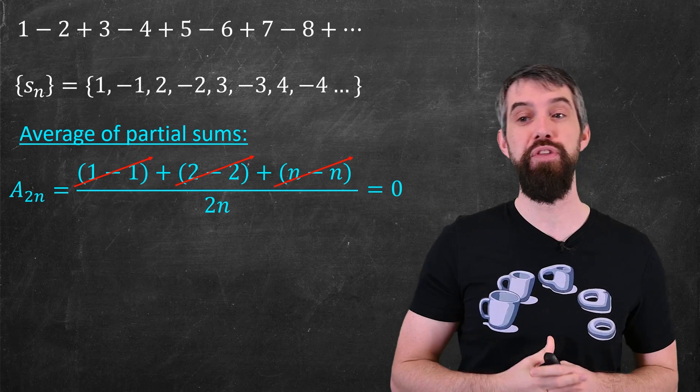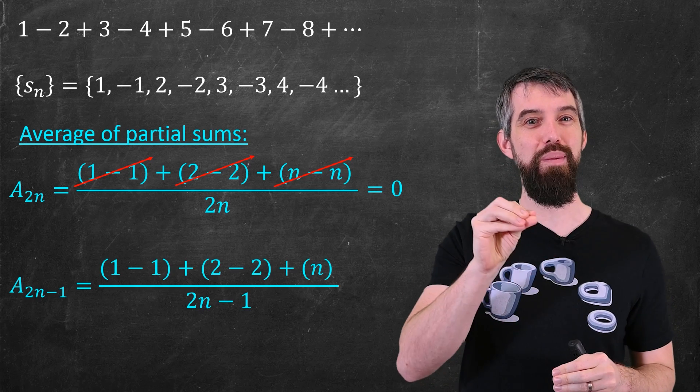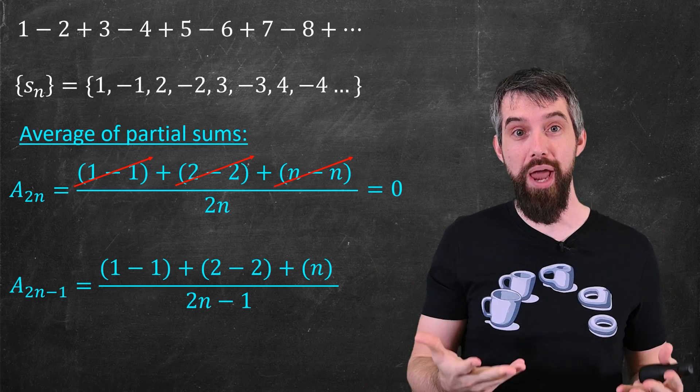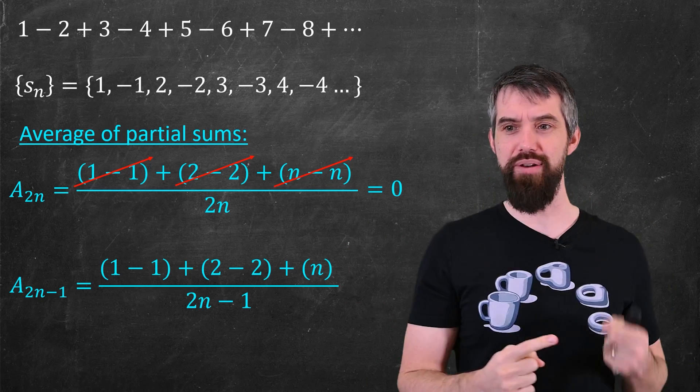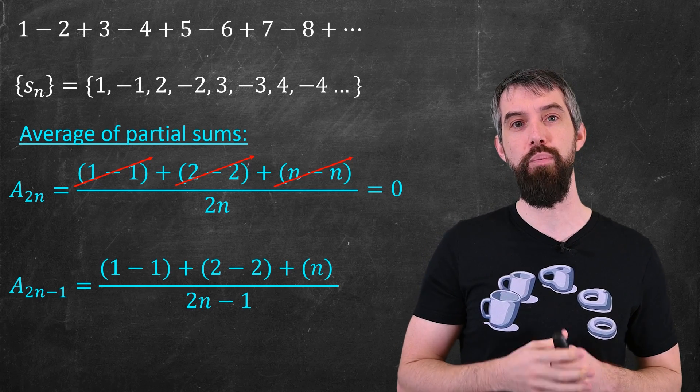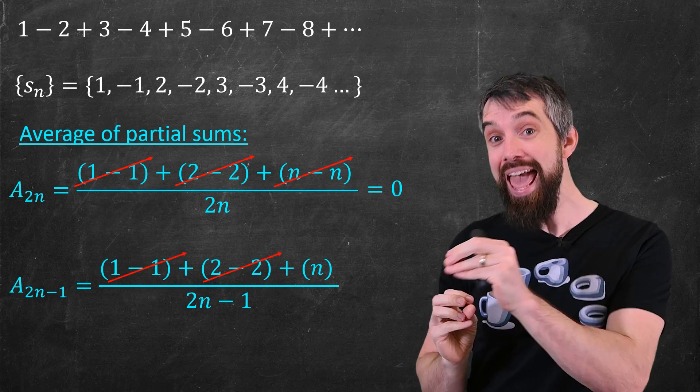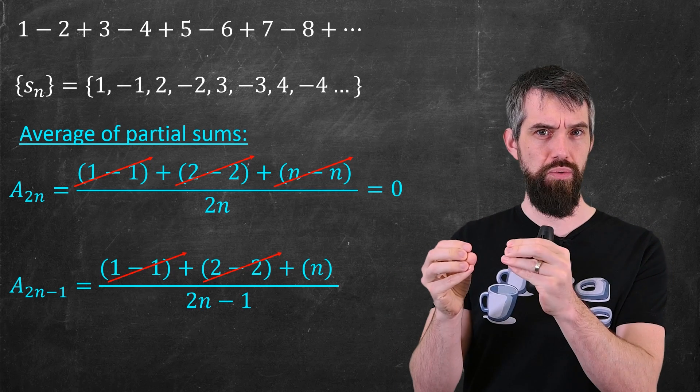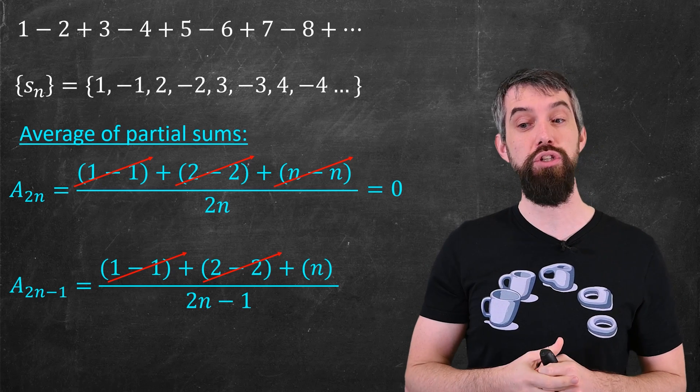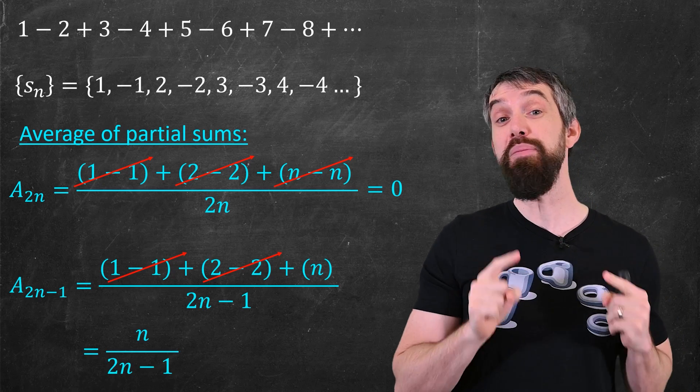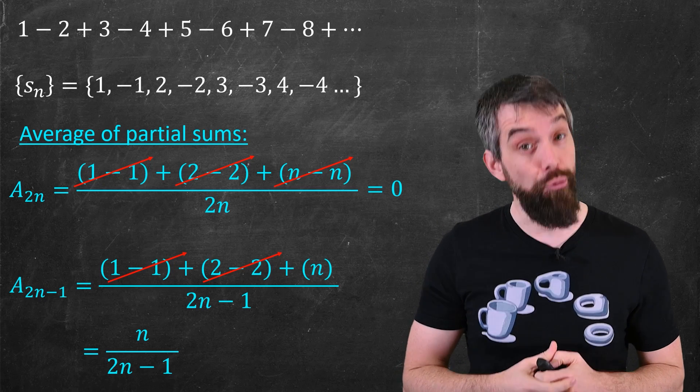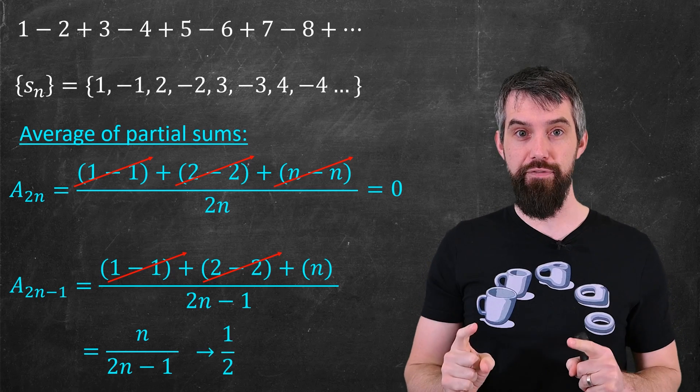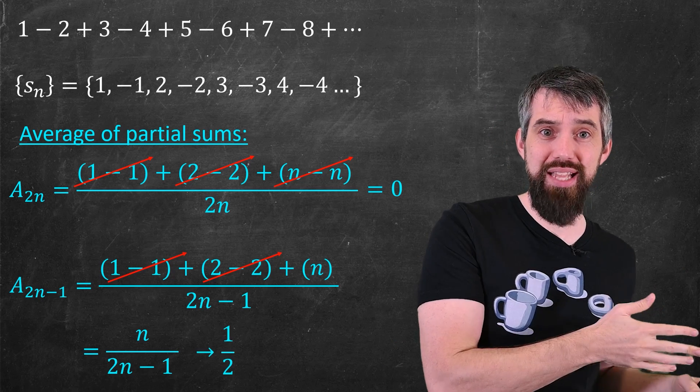But now let me do the averages of the odds, which I will use the index 2n minus 1. 2n minus 1 represents all odds with n starting at the value of 1. But now when I write it down, okay, 1 minus 1, 2 minus 2, those all cancel to 0. But it ends at n, and because it's odd, there's not a minus n at the end. So the numerator just goes to n. The denominator here is 2n minus 1. And in the limit, as n goes large, that minus 1 is going to be proving irrelevant. n's a number like a million or a billion. This is going to the value of a half.